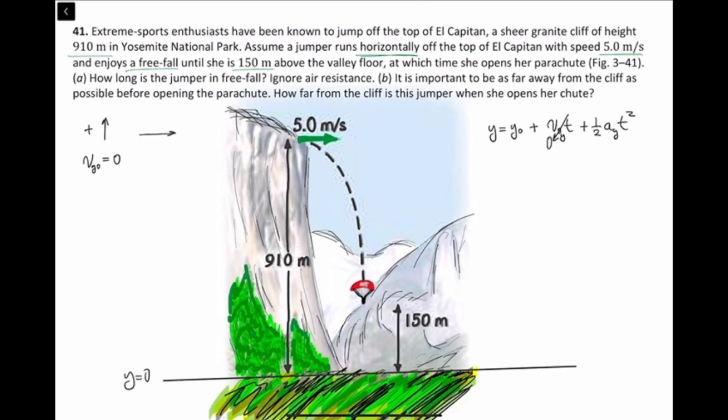Initial height is 910 meters. For how long is the jumper in free fall when she opens her chute? She's 150 meters above the valley floor when she opens her parachute, starting from a height of 910 meters. So she's in free fall until she's 150 meters, meaning her initial height is 910 meters and her final height is 150 meters.